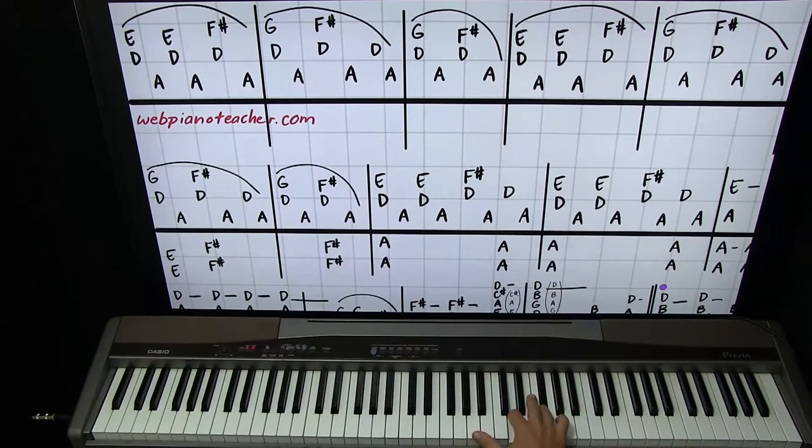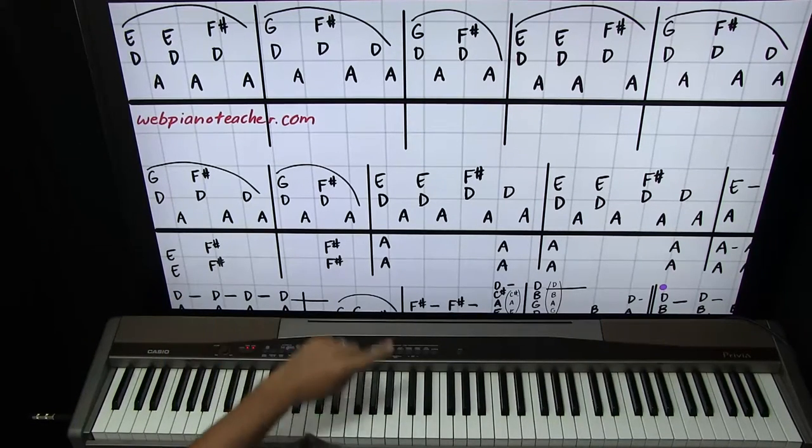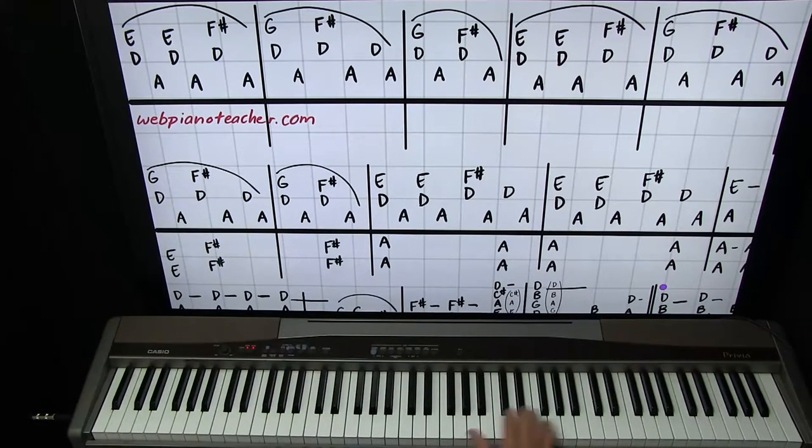And then D, F sharp with 2 and 4 back to the A, or you could cheat. Have the left hand play it if you want, but then you can't do all the stuff that's coming up later in the left hand. So let's learn it with the right hand.